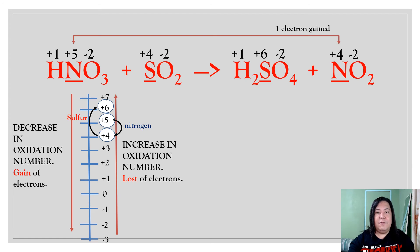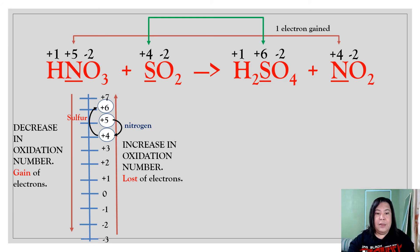Next, sulfur. In the reactant side (sulfur dioxide), the oxidation number of sulfur is positive 4. But in the product side, sulfur becomes positive 6. So from positive 4 to positive 6 — looking at the number line, the oxidation number increases. From 4 to 5 to 6, there is a 2-electron loss. Increase in oxidation number indicates electron loss, so there is a 2-electron loss for sulfur.